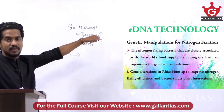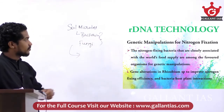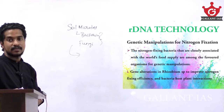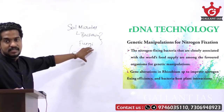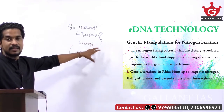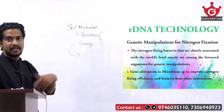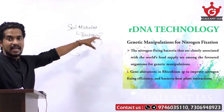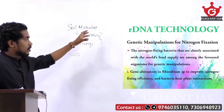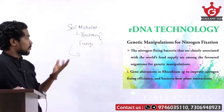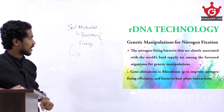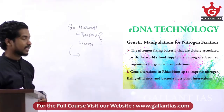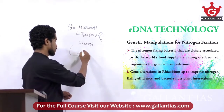We are using rDNA technology — genetic manipulation for nitrogen fixation. Some plants carry out nitrogen fixation through a symbiotic relationship between bacteria and the legume root plants. Some plants do not have the ability for nitrogen fixation, so we can use genetic manipulation for that. The nitrogen-fixing bacteria that are closely associated with the root zone are among the favored organisms for genetic manipulation.